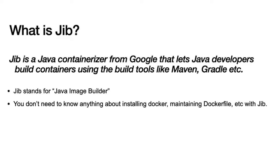Jib basically stands for Java Image Builder. The most important thing about Jib you need to know is that you don't need a Docker daemon, although it does have support for that if you want. The default behavior — and the reason most people like Jib — is that you don't have to maintain Dockerfiles or have a Docker CLI and then do docker build and docker push. Java developers don't have to spend hours or weeks learning a new technology like Docker just to containerize their application.